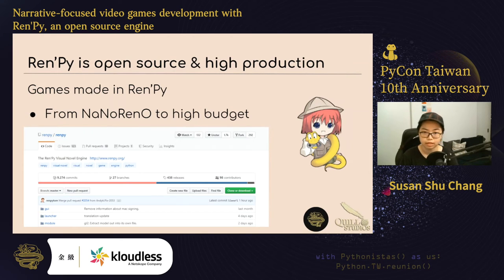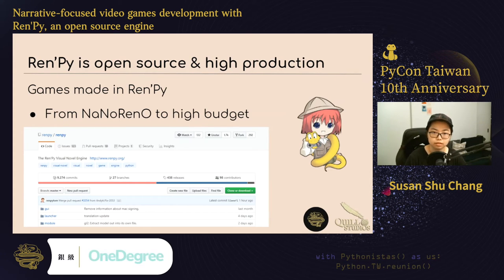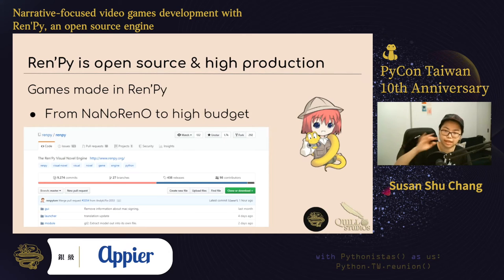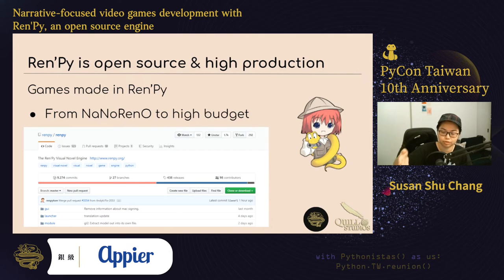介绍一下 Ren'Py：Ren'Py 是 open source，所以它是免费的，你可以更改它，或者你可以自己任意地 fork and make modifications、make pull requests 之类的。用 Ren'Py 做的游戏可以从很小规模的游戏——就是 NaNoRenO，一个每年大概一个月、有一点像 Game Jam，就是游戏的 Hackathon，每个人就是花一个月然后做一个小游戏——到很大的公司然后有蛮高的经费都可以用 Ren'Py 制作。